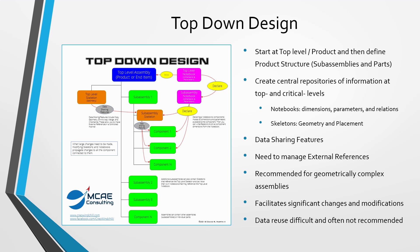Another important repository of information is skeleton models. Whereas notebooks contain dimensions and parameters, skeletons contain important geometry affecting multiple components at the top level or in different sub-assemblies. Skeletons can also be used to locate components in your assemblies. Data sharing features like copy geometry, shrink wrap, merge, and inheritance are used to communicate information from a skeleton model into a target component. A major aspect of top-down design is managing external references to avoid negative effects, such as circular references where one component is both the parent and child of another.